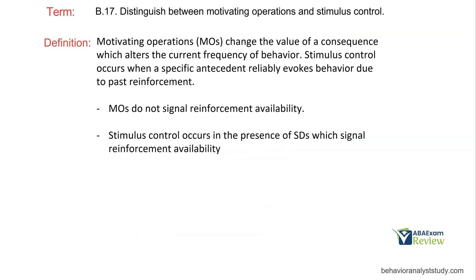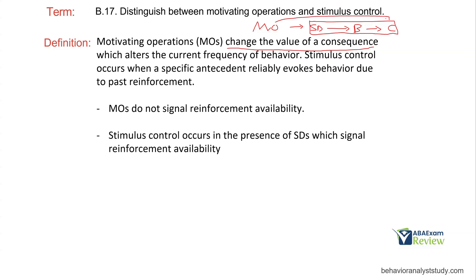Quick recap on MOs and stimulus control. Our four-term contingencies look like MO, SD, Behavior, Consequence. This is your typical three-term contingency with an additional motivating operation. The main attribute of our MOs is that it changes the value of a consequence. It can evoke and abate behavior, but the key idea is the MO affects the value of the consequence.